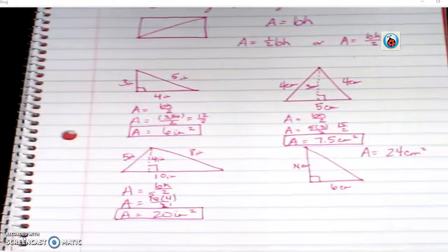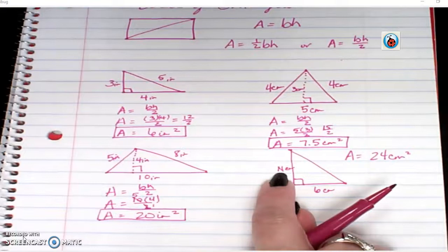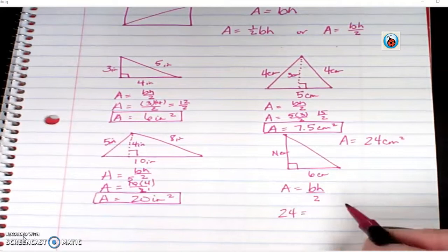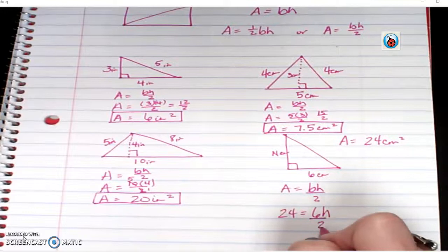Okay, one last example is when I have the area, and I need a missing side. Again, I'm going to start with my formula. Base times height divided by two. But I have the area. Area is twenty-four. The base is six. The height, I don't know. And I'm going to divide by two.